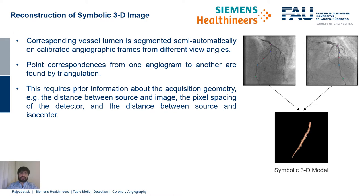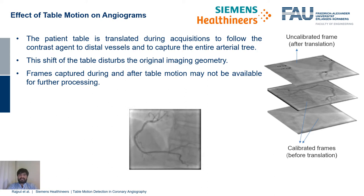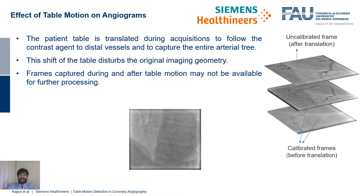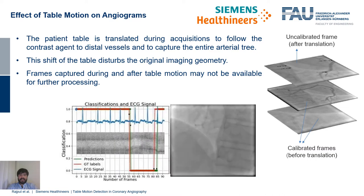In a typical ICA acquisition, the patient table is translated to follow the contrast agent. This shifting table disturbs the initially calibrated geometry, and only frames captured before the table motion will be available for further processing and 3D model creation of the arterial tree.